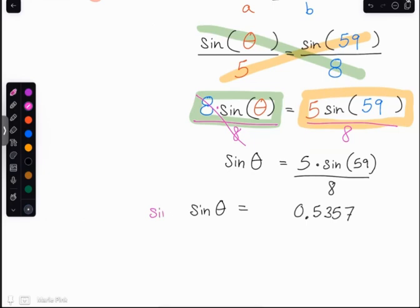So I do inverse sine of both sides. And that means that this inverse sine will cancel out the sine part but leave the theta behind. So I will have left theta equals the inverse sine of 0.5357.